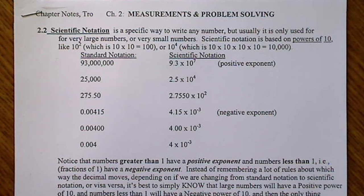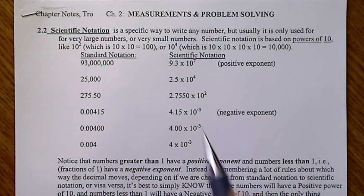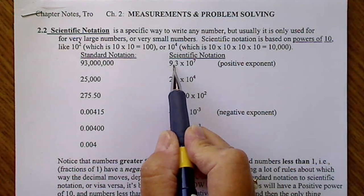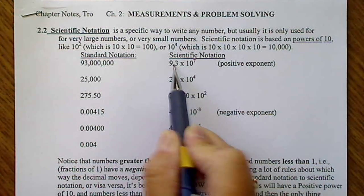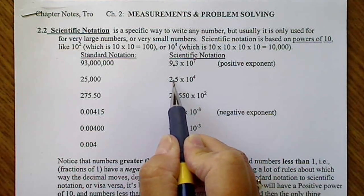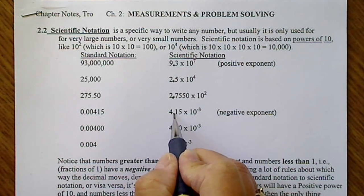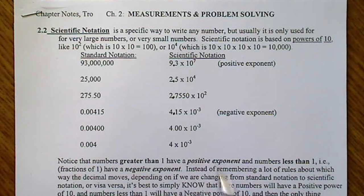When putting a number in scientific notation, the thing to remember is that there's always one number to the left of the decimal. So if we look at this column, every decimal is placed after the first number.